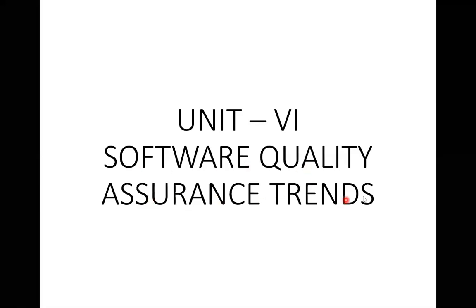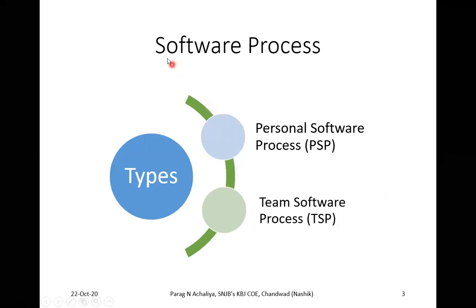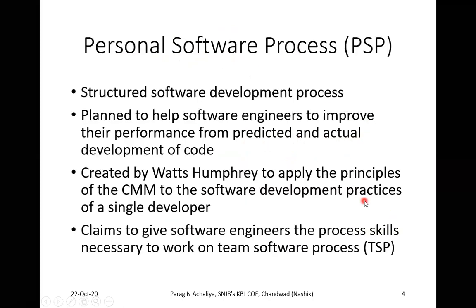We are going to see various trends in Software Quality Assurance, or SQA. The first trend is the Software Process, which is divided into two types: PSP and TSP. PSP stands for Personal Software Process, whereas TSP stands for Team Software Process. This process covers both Software Development and Software Quality Assurance.